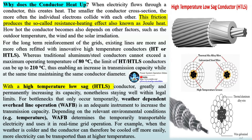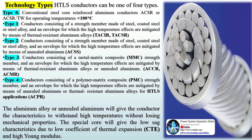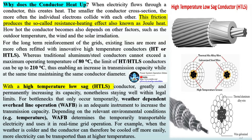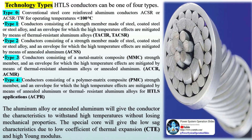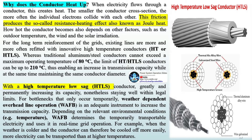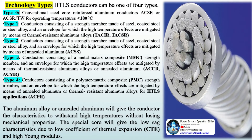Whereas traditional aluminum steel conductors cannot exceed a maximum operating temperature of 80°C, the limit of HT or HTLS conductors can be up to 210°C, enabling an increase in transmission capacity while maintaining the same conductor diameter. With a high-temperature low-sag HTLS conductor, capacity can be greatly and permanently increased whilst staying well within legal limits. For bottlenecks that only occur temporarily, weather-dependent overhead line operation (WAFB) is an adequate instrument to increase transmission capacity. Depending on environmental conditions such as temperature, WAFB determines the temporarily transportable electricity and uses it in real-time grid operation. When the weather is colder and the conductor can be cooled off more easily, more electricity can be transported than at higher temperatures.